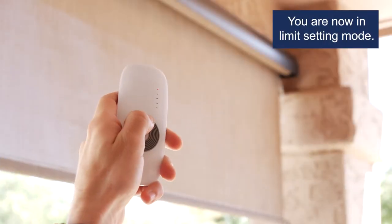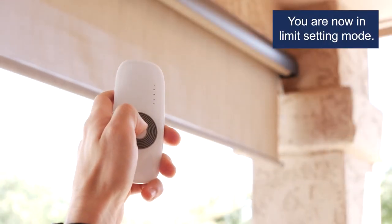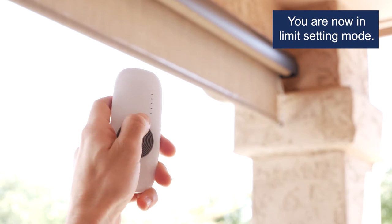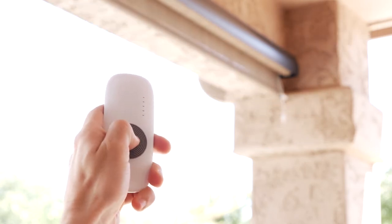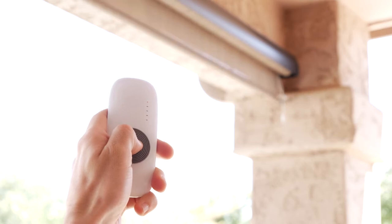Using the remote, bring your shade to a stop at the desired top position. Press and hold the stop button for 3 seconds. The motor will beep 4 times, the fabric will jog, then you'll hear one more beep.